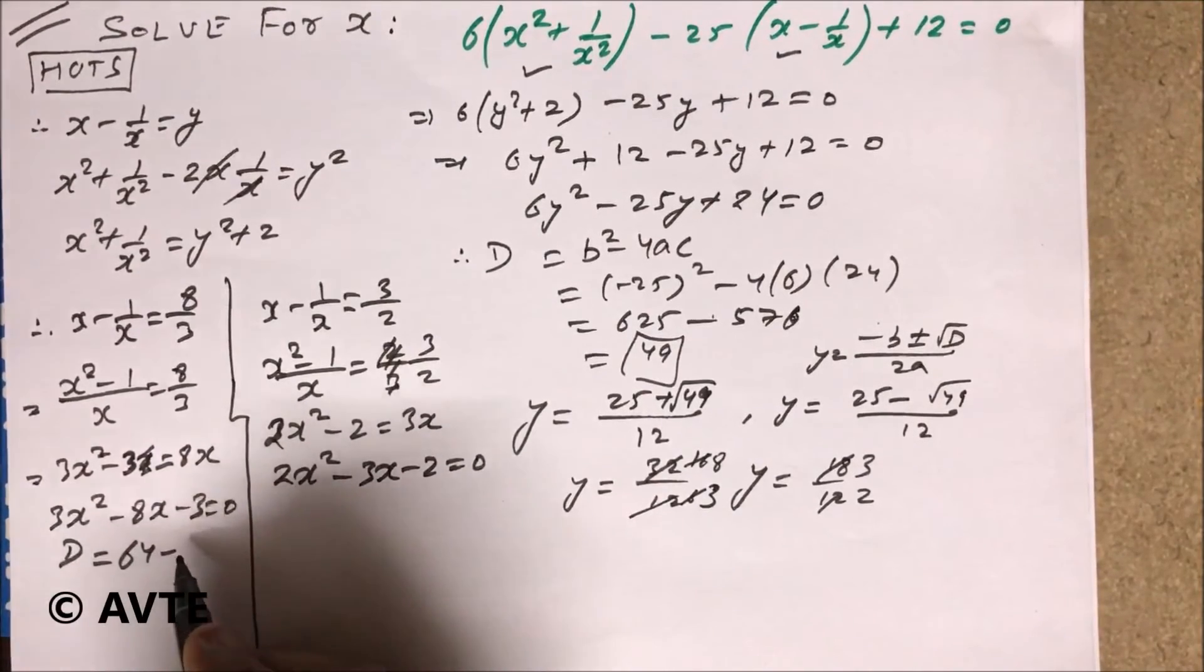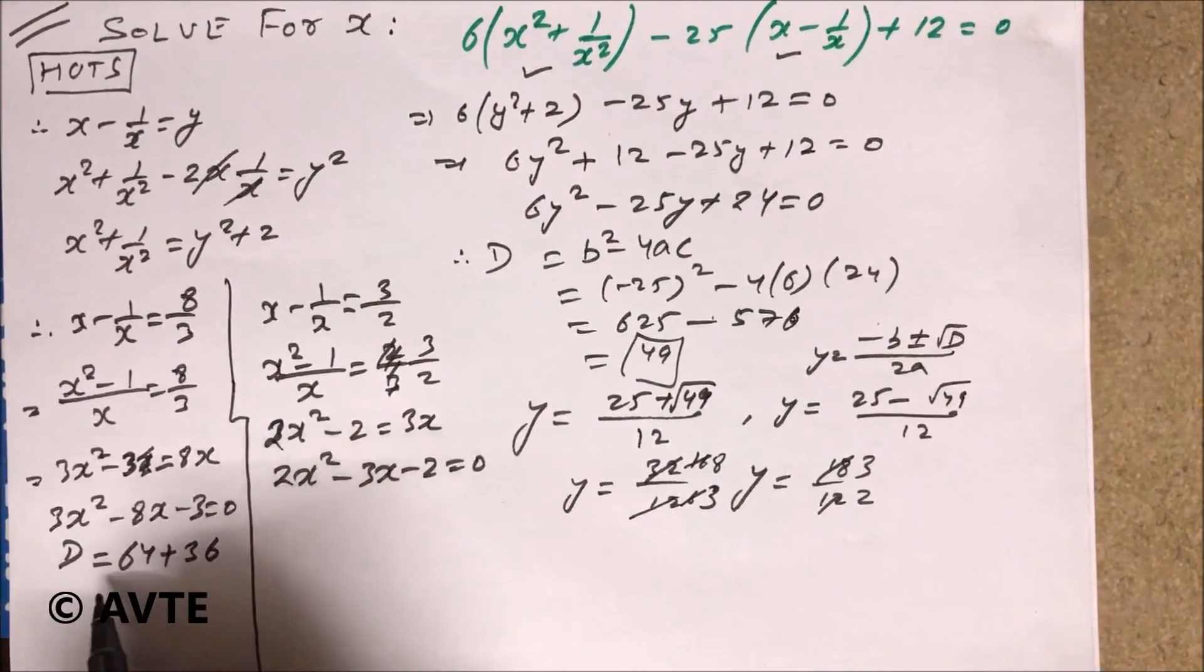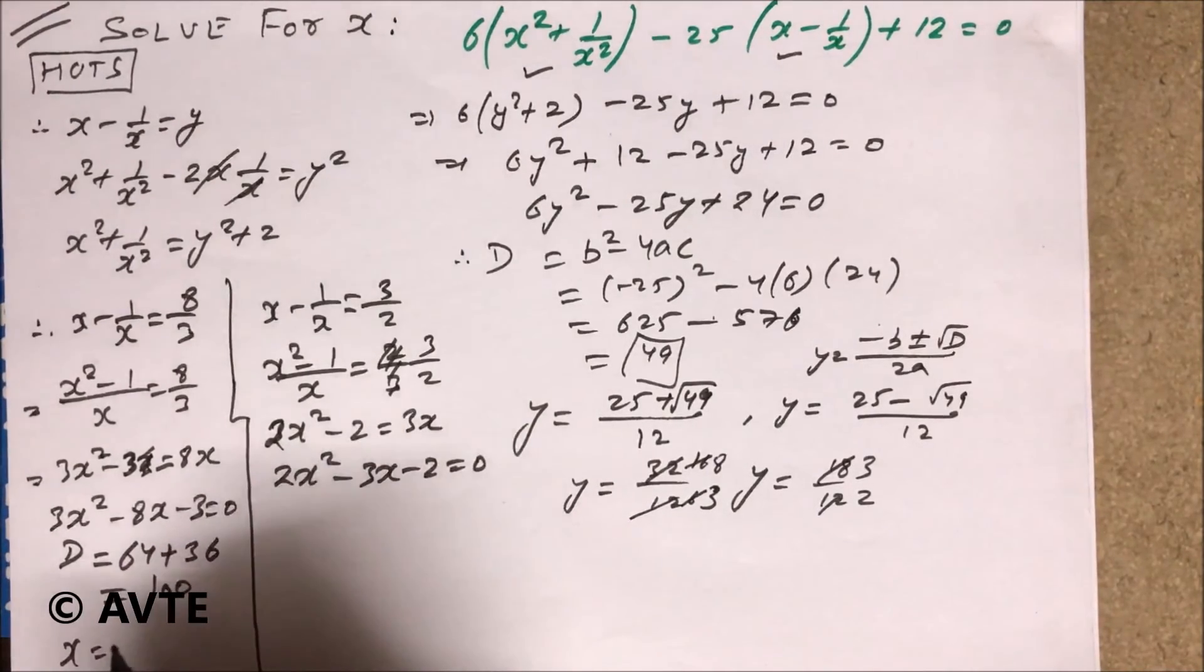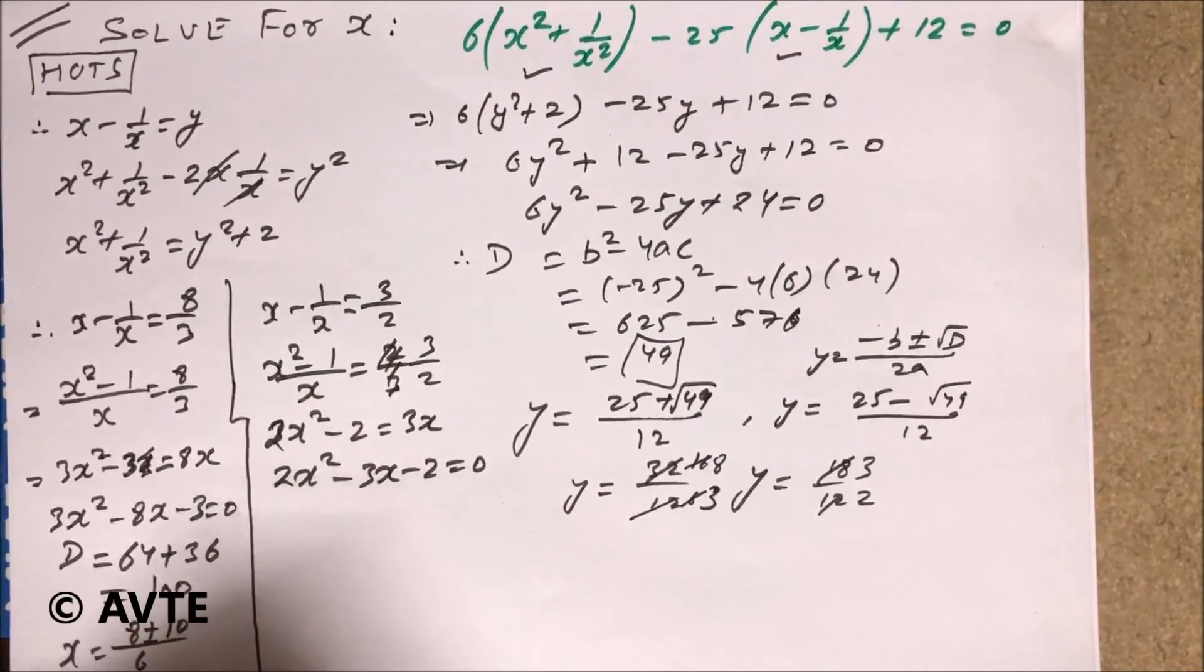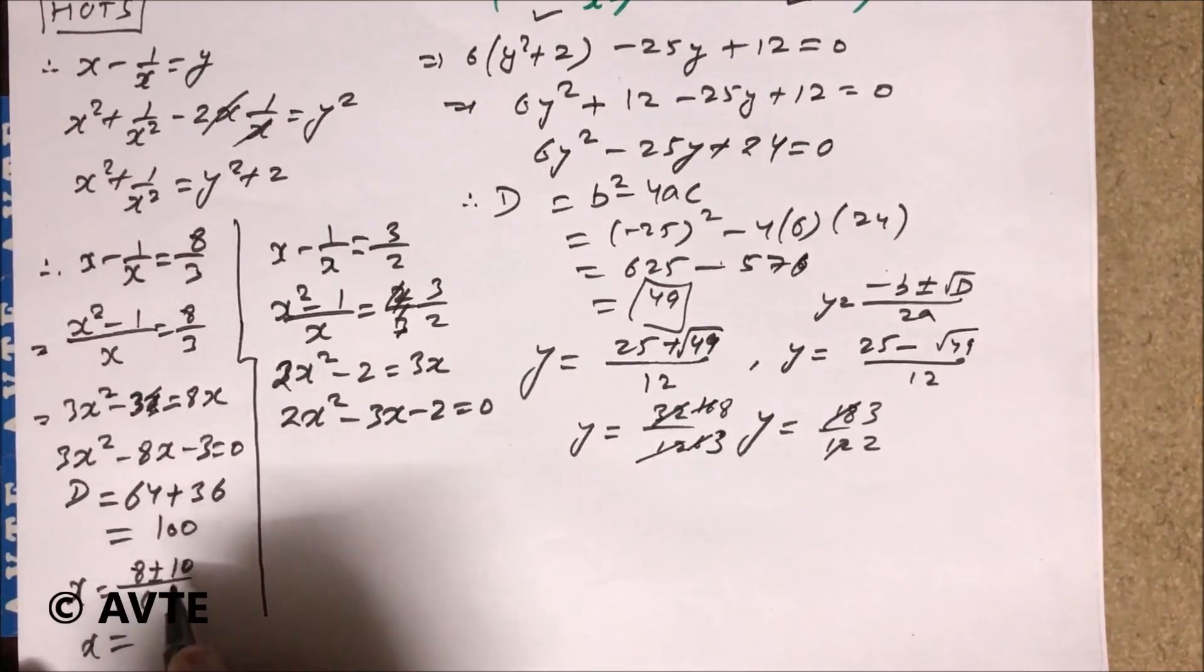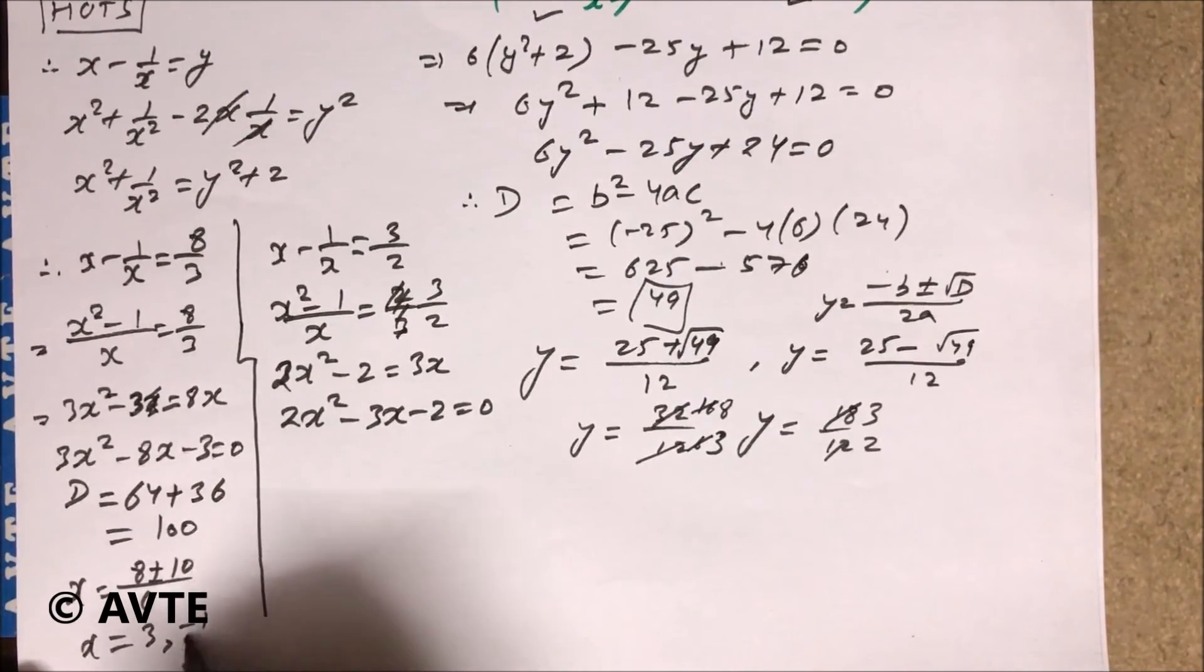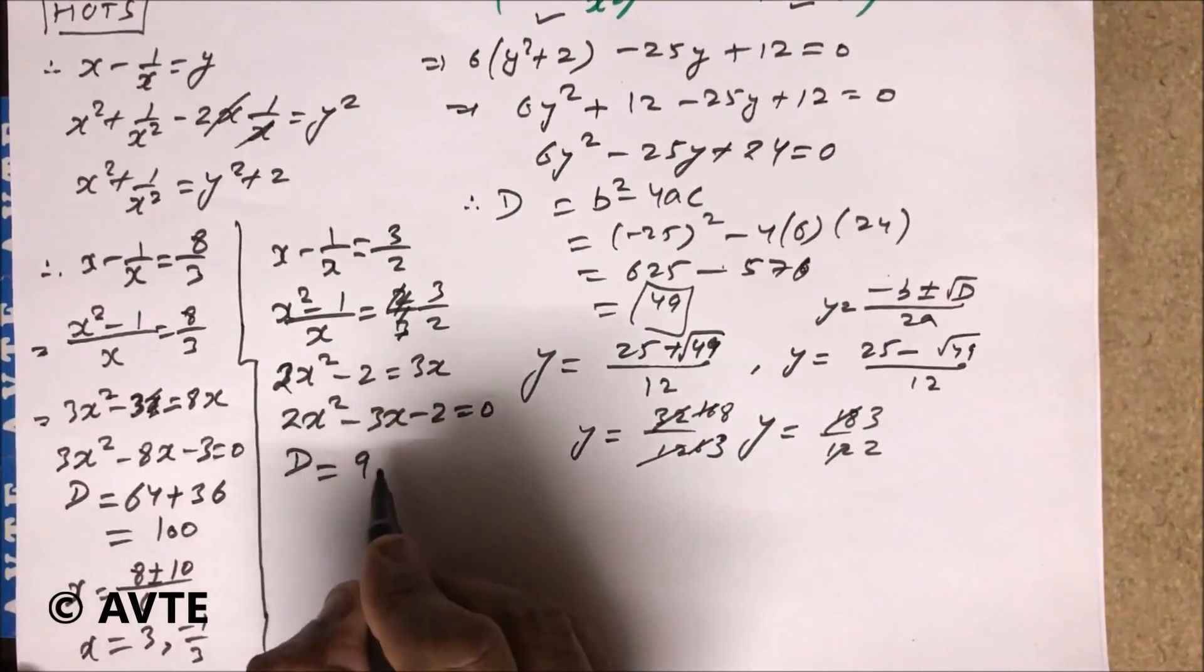So you can find d is 64. This is 8 plus minus 10 by 6. Your answer of x is 8 plus 10, 18 upon 6 is 3, and 8 minus 10 is minus 1 by 3. The answer of x, and here we do by d method. This is 9, 4, 2's are 8, 2's are 16, this is 25.